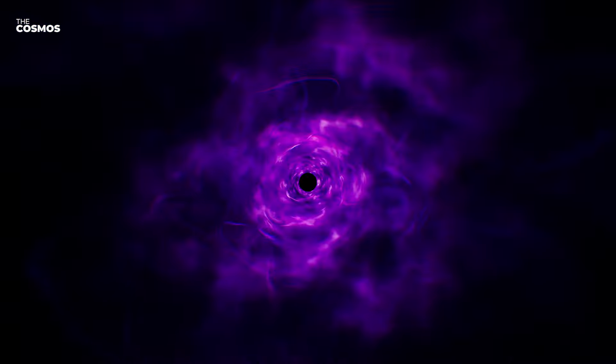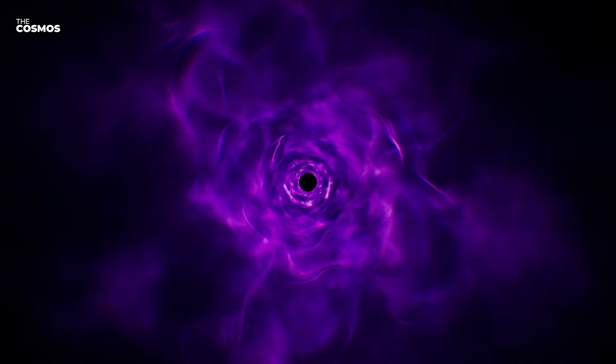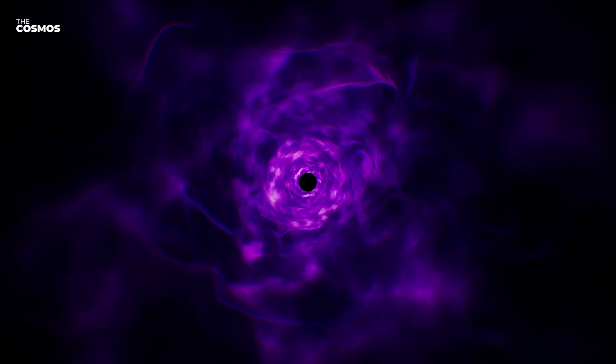As dark energy intensifies, its push against gravity becomes more powerful. Initially, this means galaxies start drifting apart at an accelerated pace. This stage may seem similar to the early stages of the heat-death, but the escalation is much faster. Within a few billion years, the space between galaxies widens so drastically that they become completely isolated from each other. But the Big Rip doesn't stop there.